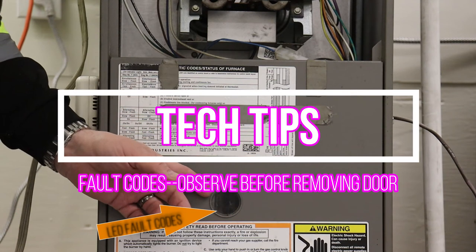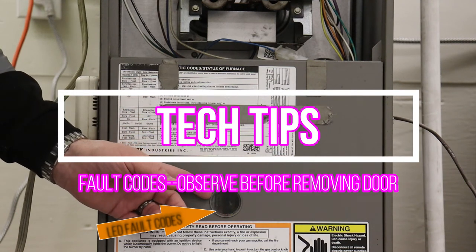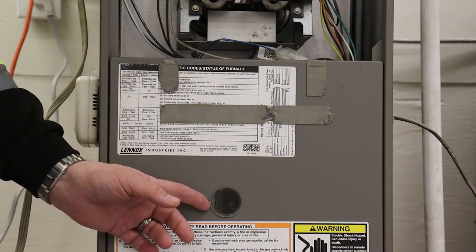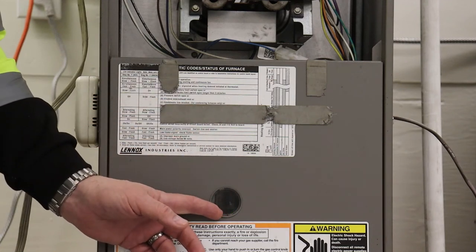Tech tip: When you come to a furnace that's having issues, before you remove the door, see if you can see any fault codes through the door sight window, if it has one.